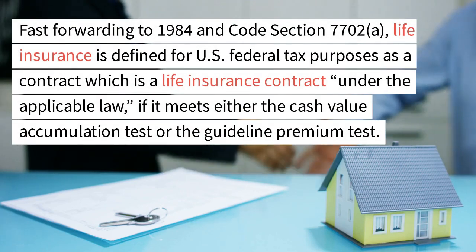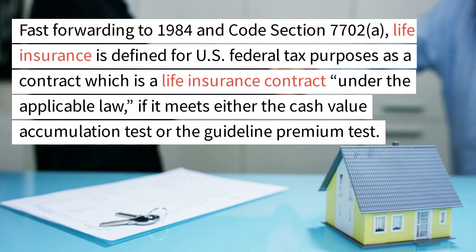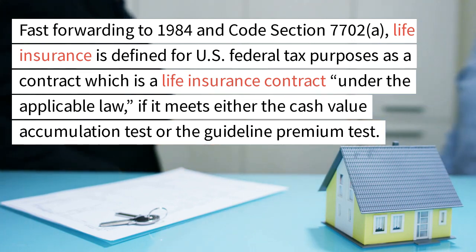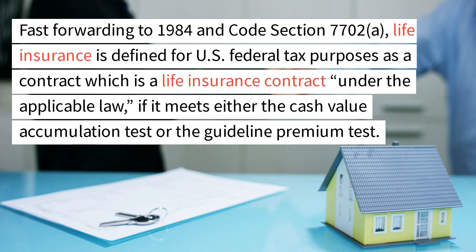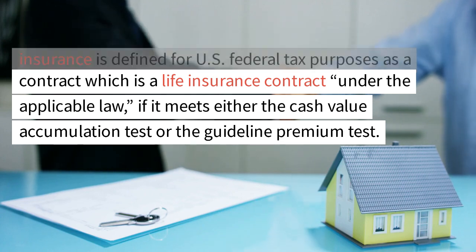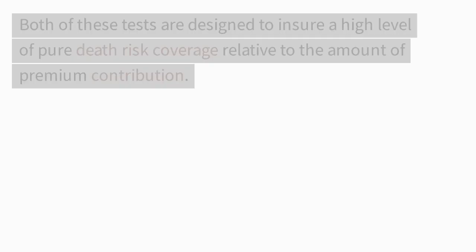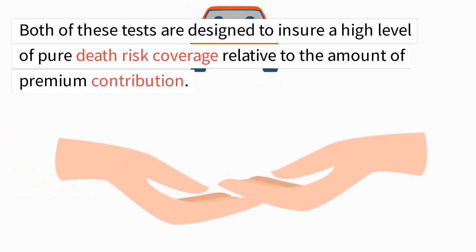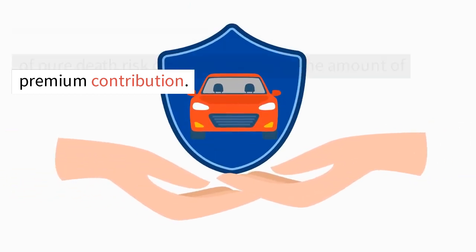Fast forwarding to 1984 and code section 7702A, life insurance is defined for U.S. federal tax purposes as a contract which is a life insurance contract under the applicable law, if it meets either the cash value accumulation test or the guideline premium test. Both of these tests are designed to ensure a high level of pure death risk coverage relative to the amount of premium contribution.